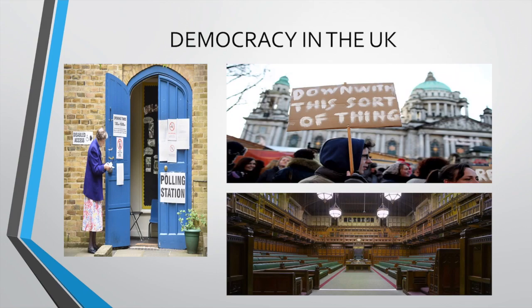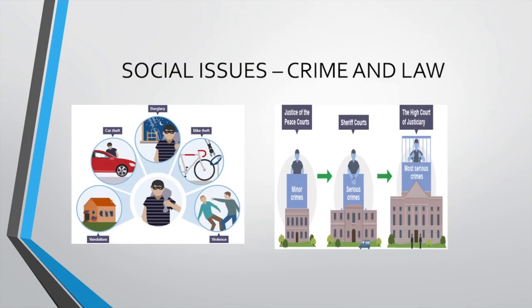The important role that pressure groups have in holding the government to account is also covered. The next unit is social issues, and at Holyrood the social issues we cover is crime and law. Many pupils find this the most interesting part of the course, especially those who are considering a career in law. There are two elements: the first looks at crime, in particular causes of crime such as economic, biological and sociological reasons, and the consequences that crime has on various people in society. The law element looks at the criminal justice system, investigating the roles and effectiveness of the courts, the police and the prison service.